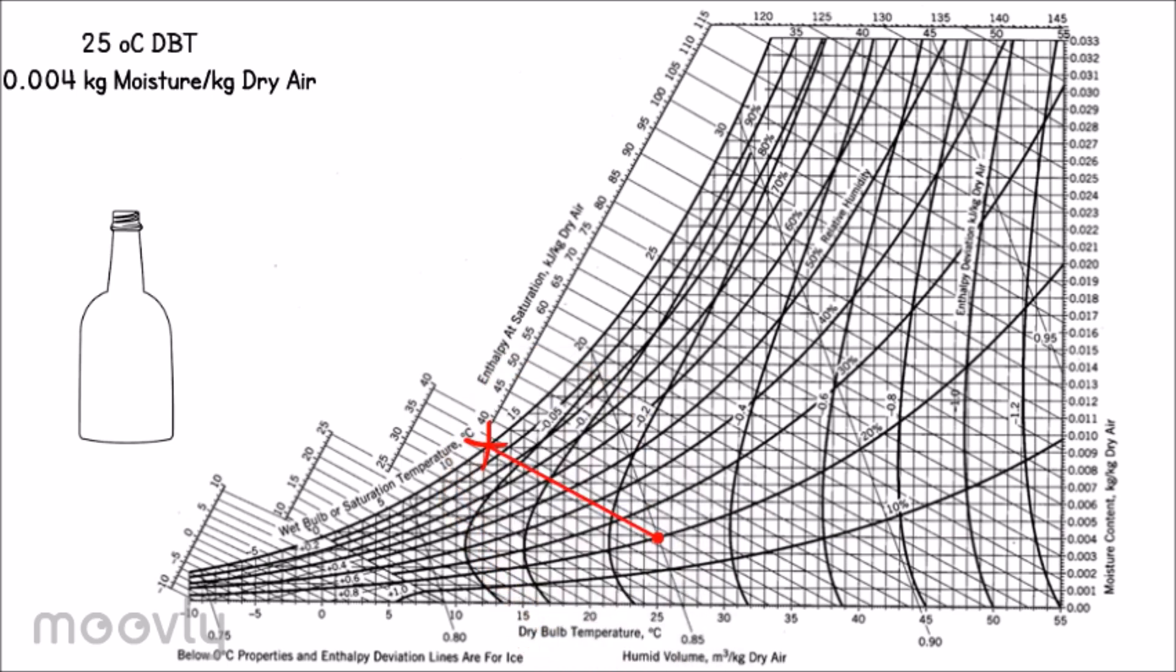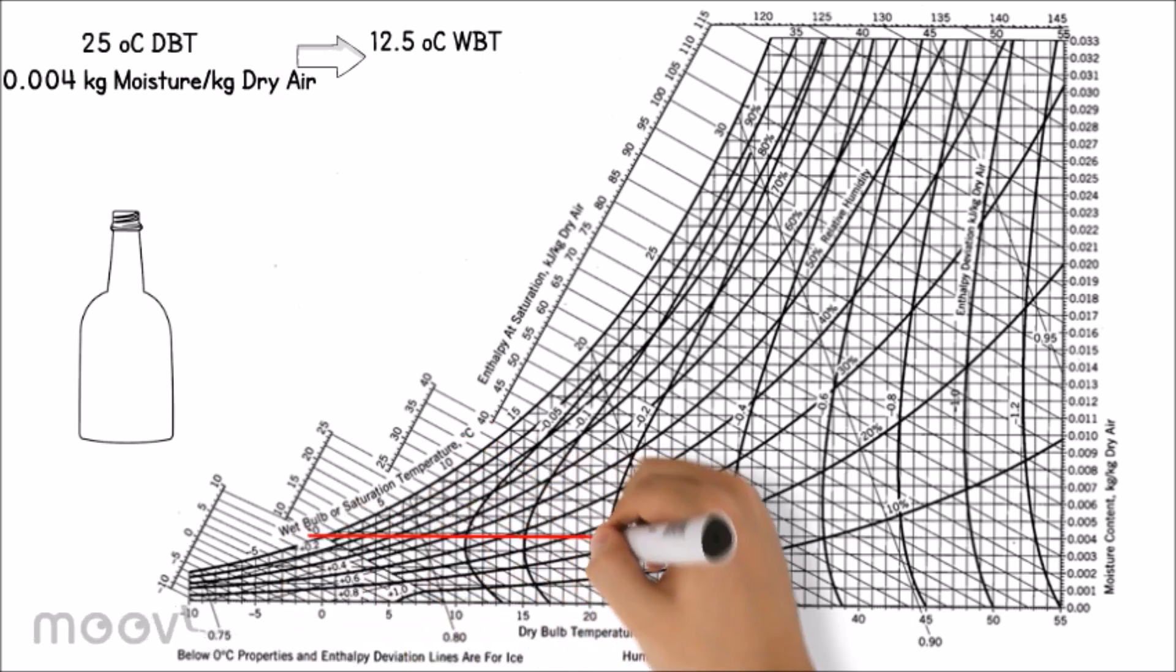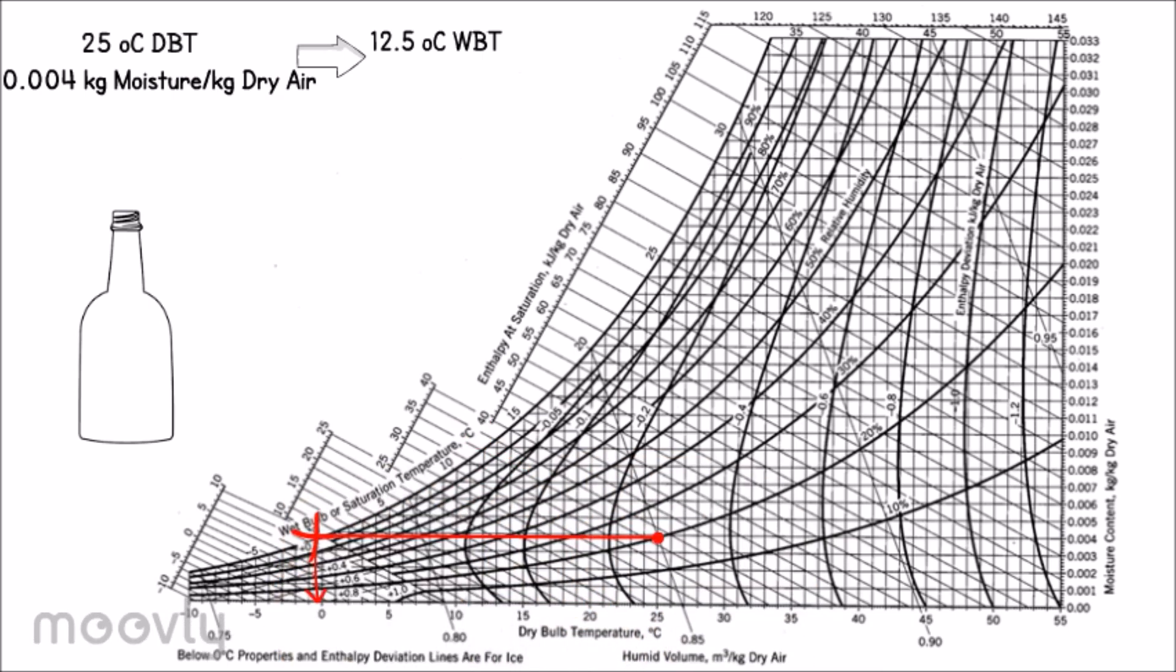we can know that wet bulb temperature of the system is 12.5 degrees Celsius, while dew point temperature of the system is negative 0.5 degrees Celsius.